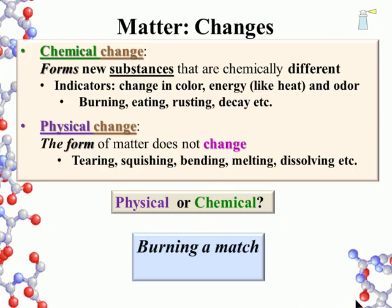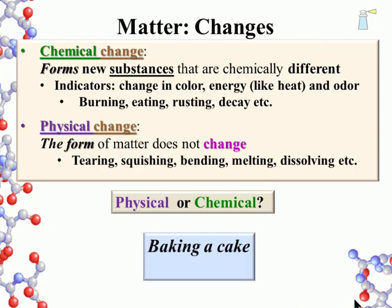What about burning a match? That is a chemical process because both the tip of the match and the wood of the match become different substances once it burns. What about baking a cake? That is a little trickier — the food stuff in the batter is chemically different than the cake, so cooking is fundamentally a chemical process. Practice the problems in your text; the more you see these questions, the better you will be at sorting them out.